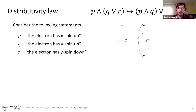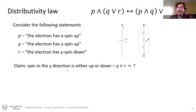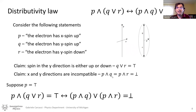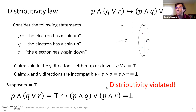One of the examples usually put forward is this: we consider an electron with spin that can be oriented along the x-axis and y-axis. We have three statements: P is that the electron has x spin up, Q is that the electron has y spin up, and R is that the electron has y spin down. The first claim says that spin in the y direction is either up or down, so Q or R equals true. The second claim is that x and y directions are incompatible, so P and Q is false, and P and R is also false. So if P is true, the left side is true, but the right side is false, and therefore we say distributability fails.